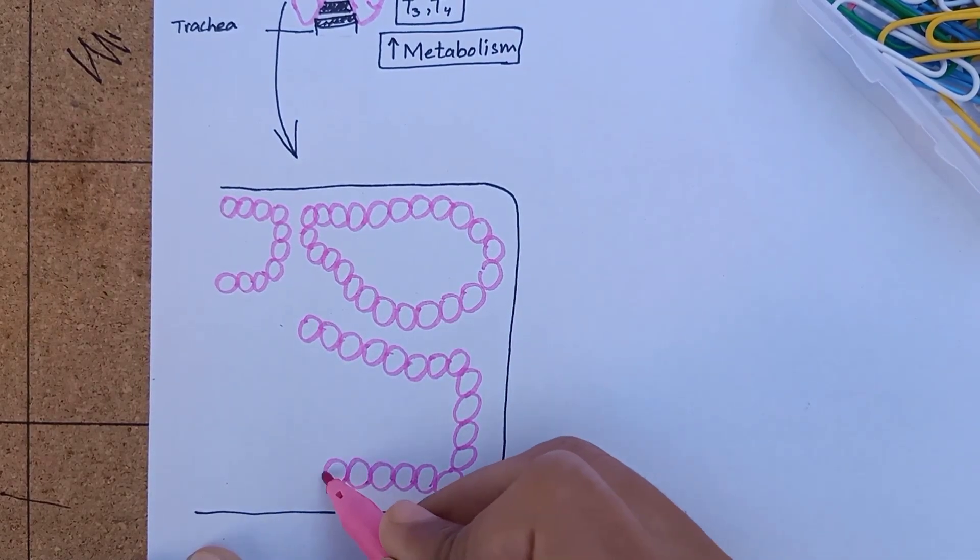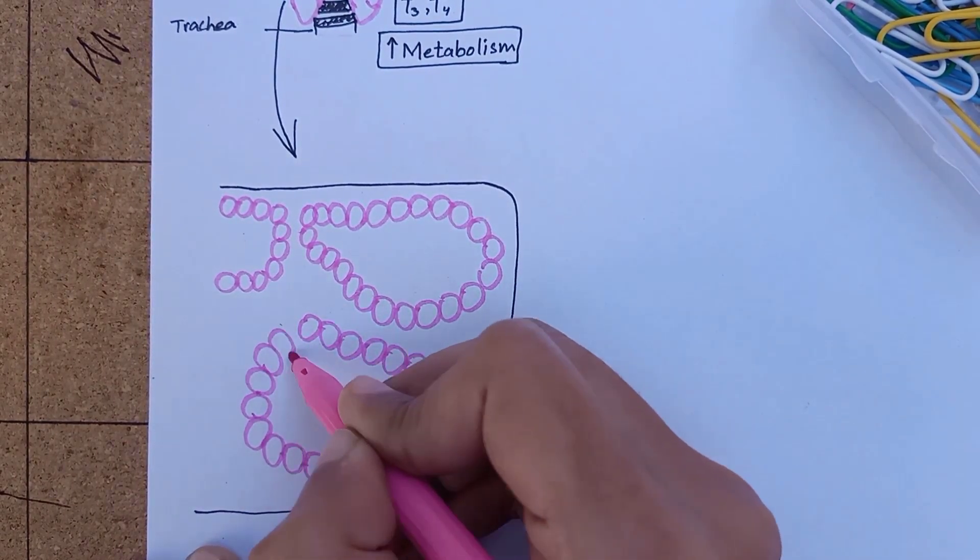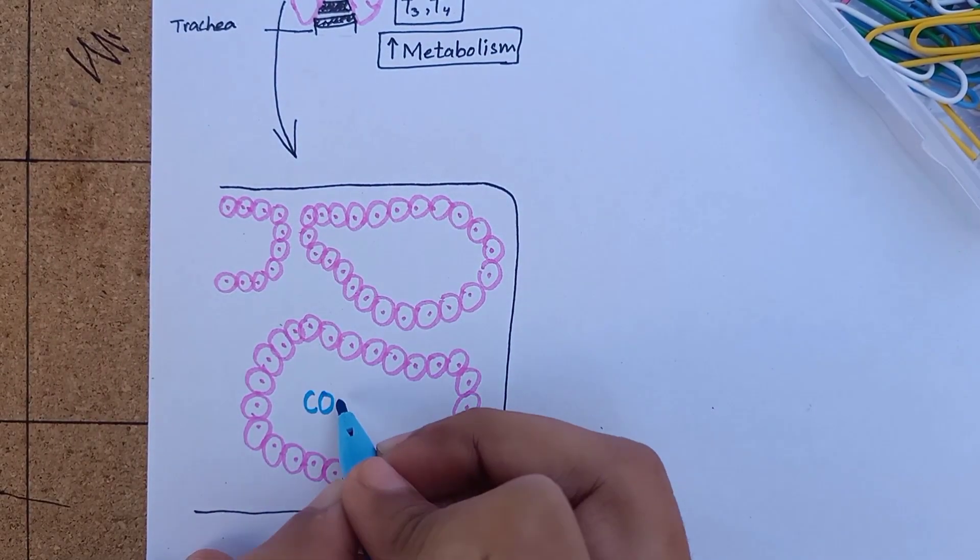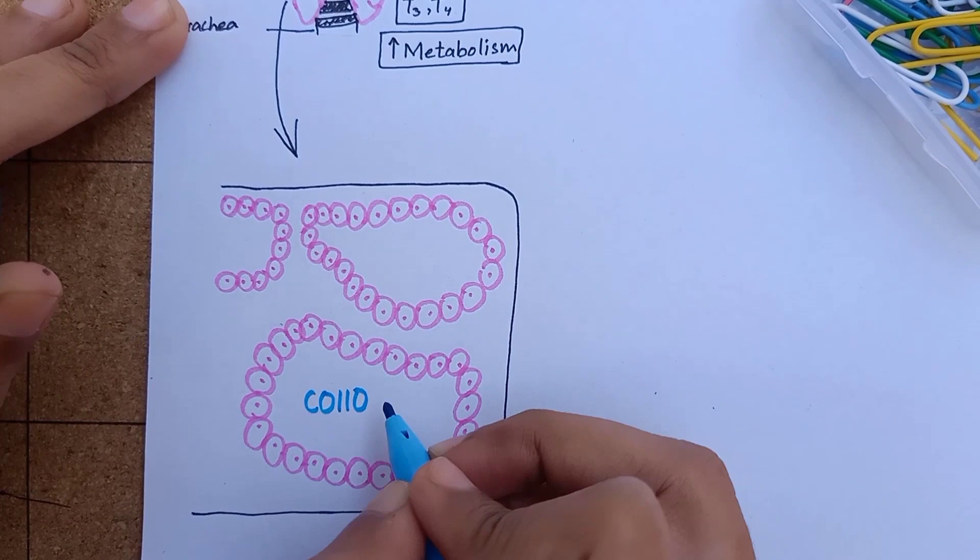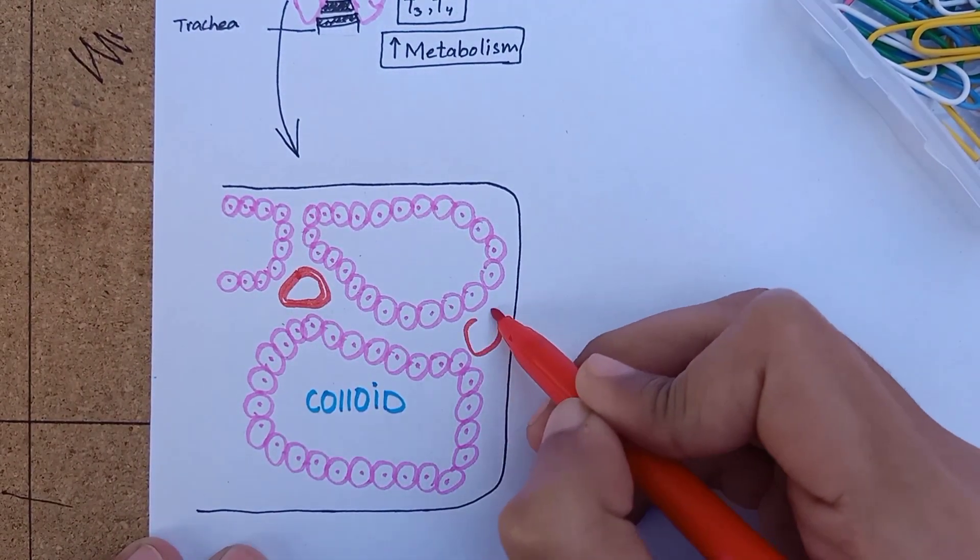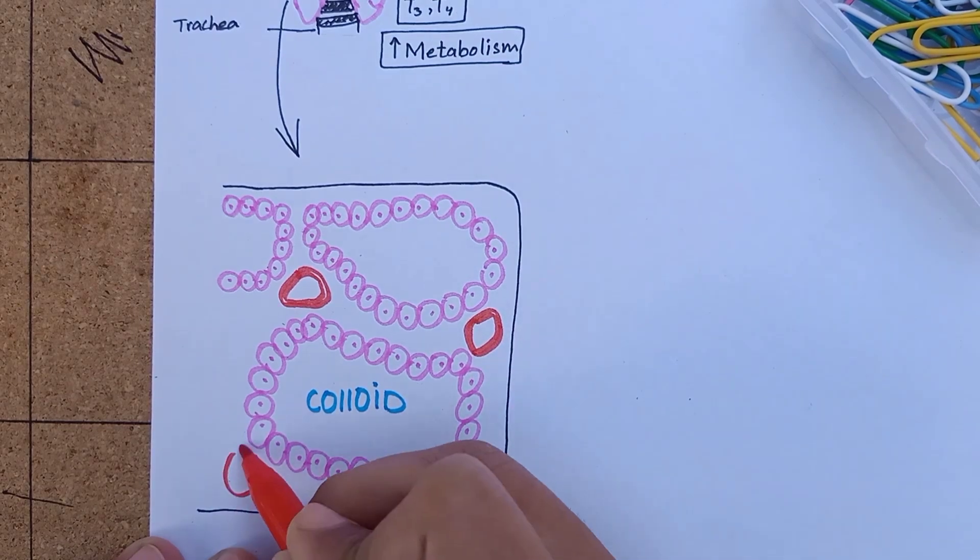These lining cuboidal epithelial cells secrete a substance into the lumen of follicles called colloid. The major constituent of colloid is a large glycoprotein called thyroglobulin which contains thyroid hormones. There are blood capillaries surrounding the follicles.